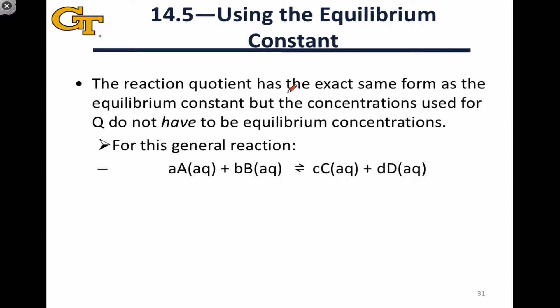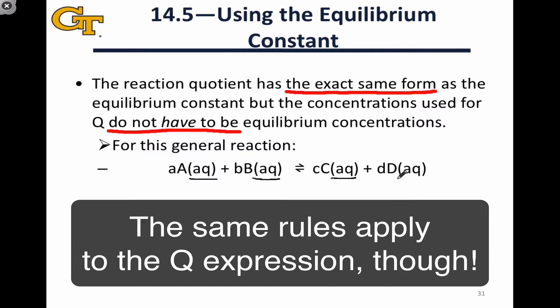The reaction quotient has the exact same form as the equilibrium expression, but the concentrations that we use in this Q do not have to be equilibrium concentrations. They can be concentrations under any conditions. Usually the conditions, the concentrations that go into calculating Q are either implied or explicitly stated in a problem. So for the general reaction, A moles of A plus B moles of B goes to C moles of C and D moles of D, where everything is aqueous.